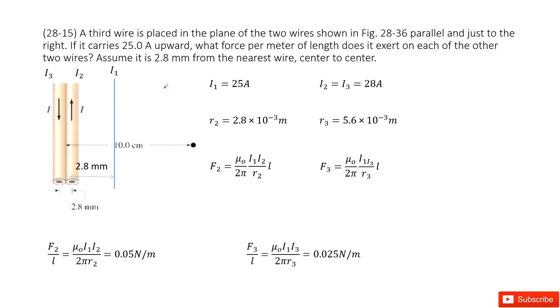So you can see we have two wires. At a distance 2.8 millimeter away, we have another wire. We call it I1. So this is I2, I3. And for these three wires, they are with current traveling through them. Now we need to find the forces per meter of length that acts on each of the other two wires.